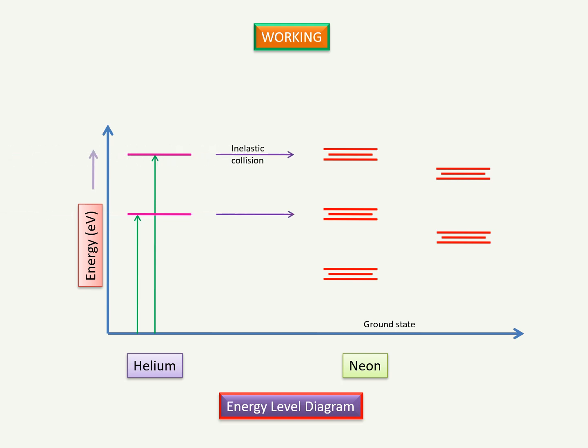The excited Helium atoms collide inelastically with the Neon atoms which have close energy level as that of the Helium energy level. Therefore, the Helium atom delivers its energy to Neon atoms by the process known as resonant collisional energy transfer. This resonant energy transfer takes place because the corresponding energy levels of Helium 2s1 and 2s2 are almost closer to the Neon energy levels 2s and 3s.